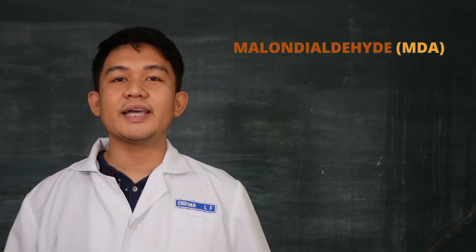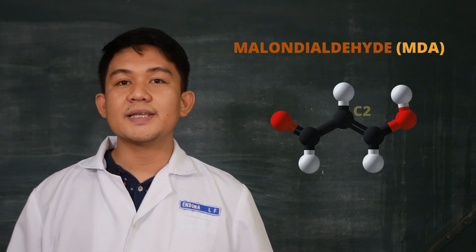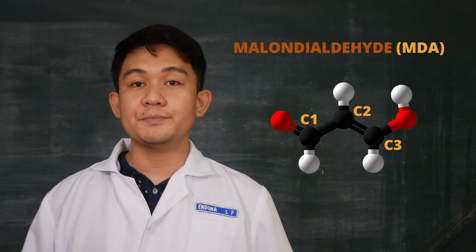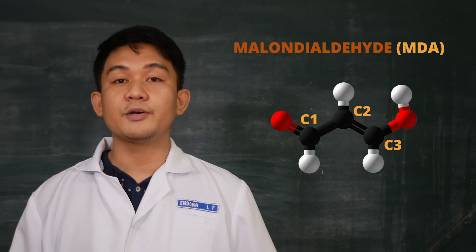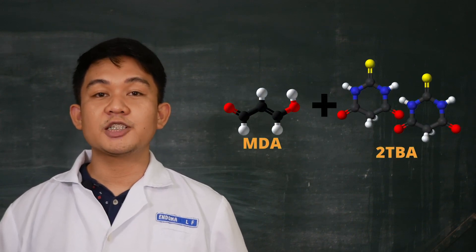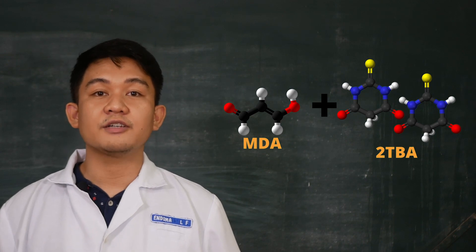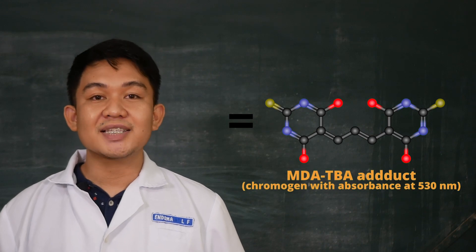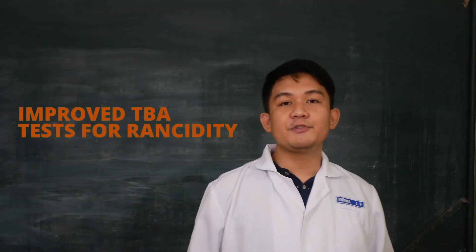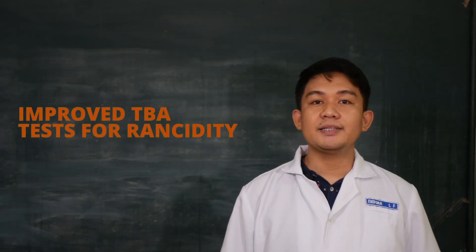MDA is a 3-carbon dialdehyde with carbonyl groups at carbon number 1 and carbon number 3 positions, and is known to be mutagenic to humans because it can form adducts with proteins and DNA. The most common method to determine MDA in food is a spectrophotometric measurement of the pink-colored adduct of MDA with 2-thiobarbituric acid or TBA, which gives a maximum absorbance from 530 to 535 nanometers. We refer this procedure to the improved TBA test for rancidity by DW Lemon.